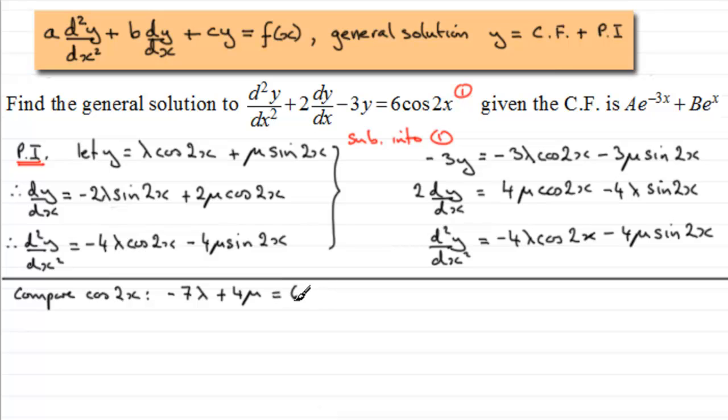Let's also compare now the coefficients of sin2x. So we'll just write that here. Compare the sin2x coefficients. And again, if we do this, what we've got is minus 4 lambda.